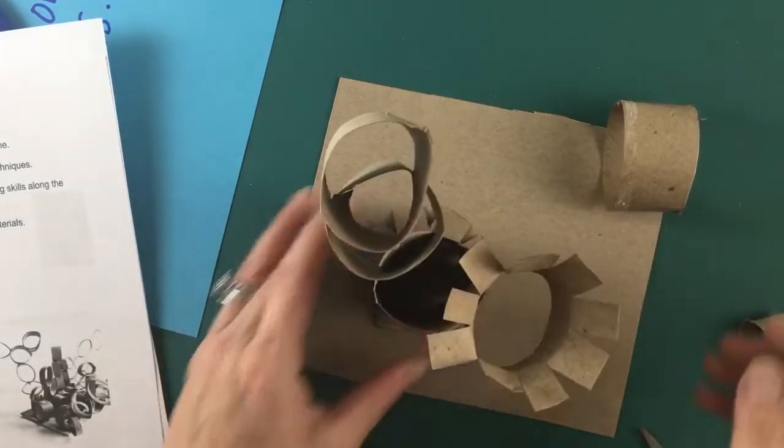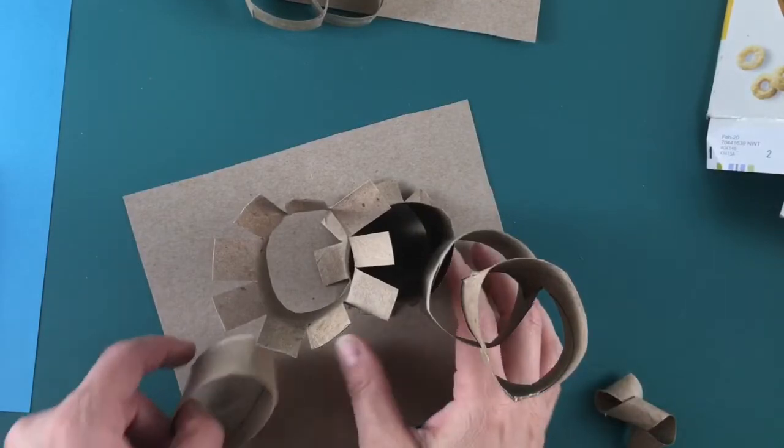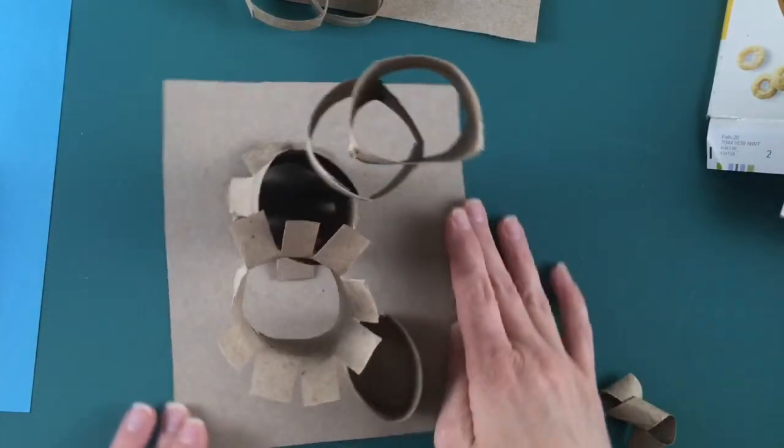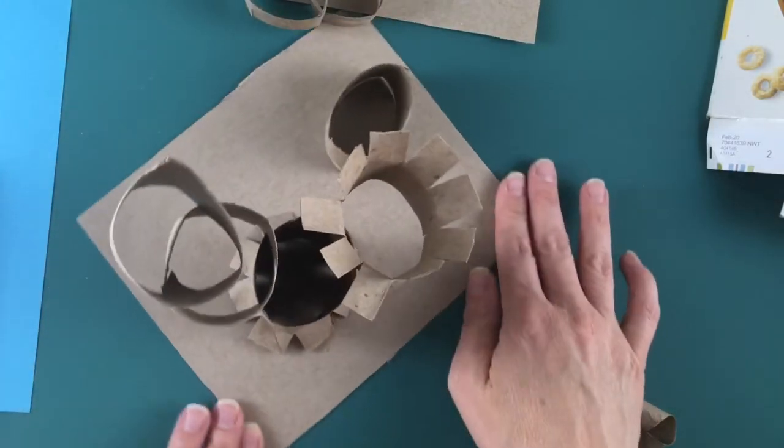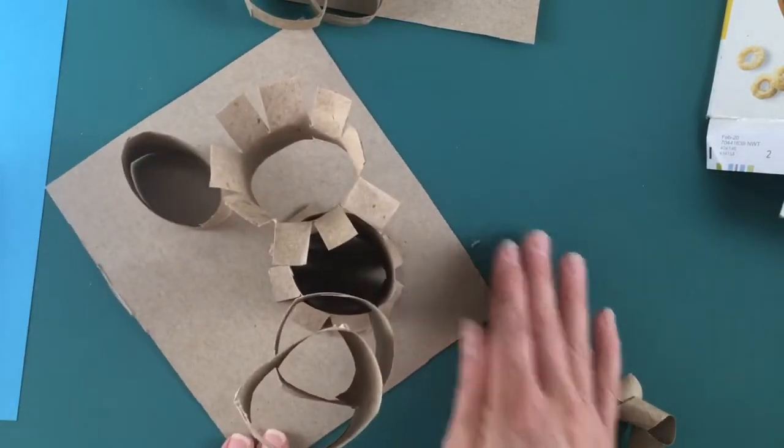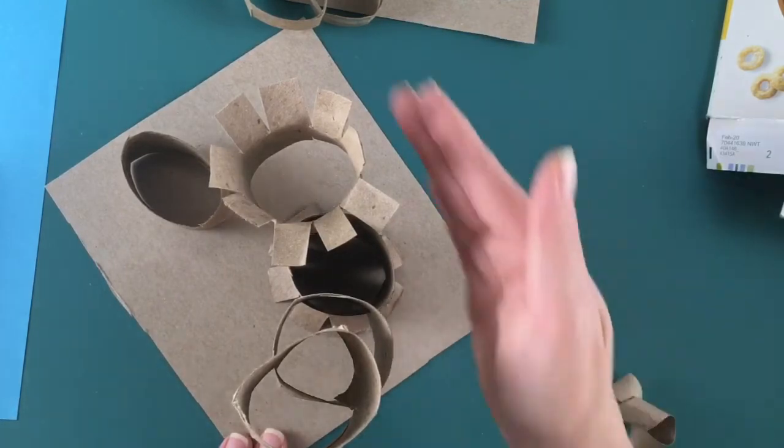And again remember 3D means you're looking at it from all. So remember sculpture is meant to be looked at from all sides. The front, the side, the back. So make sure as you work you're turning it around. It's three dimensional. So it has a height, a width, and a depth.